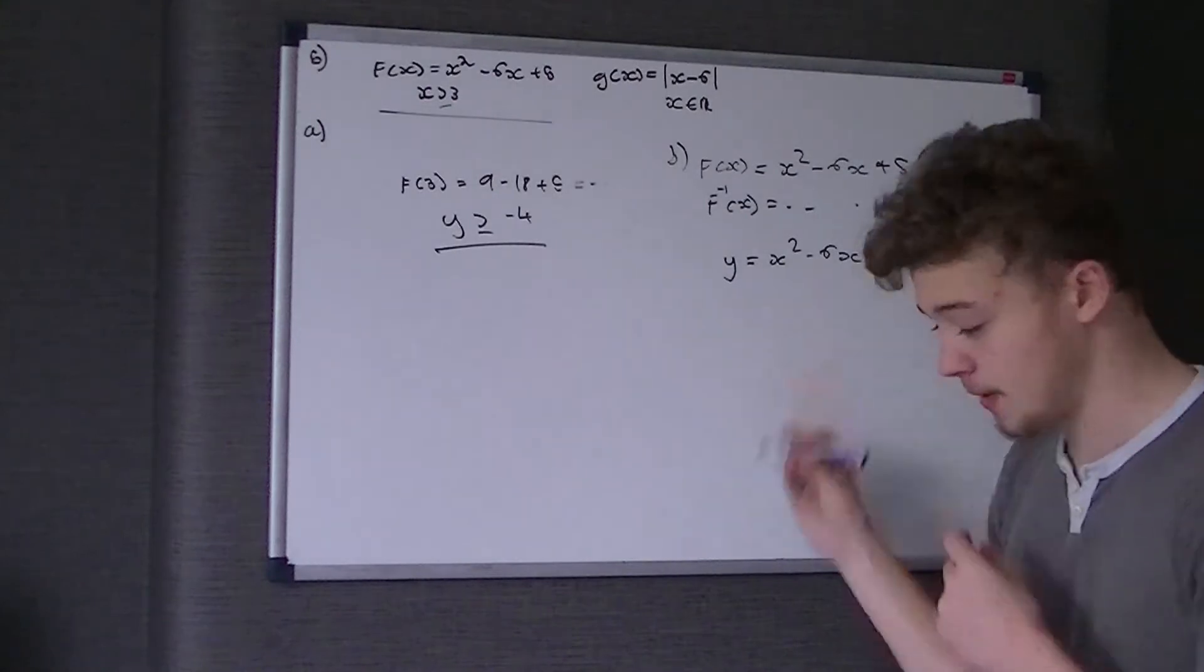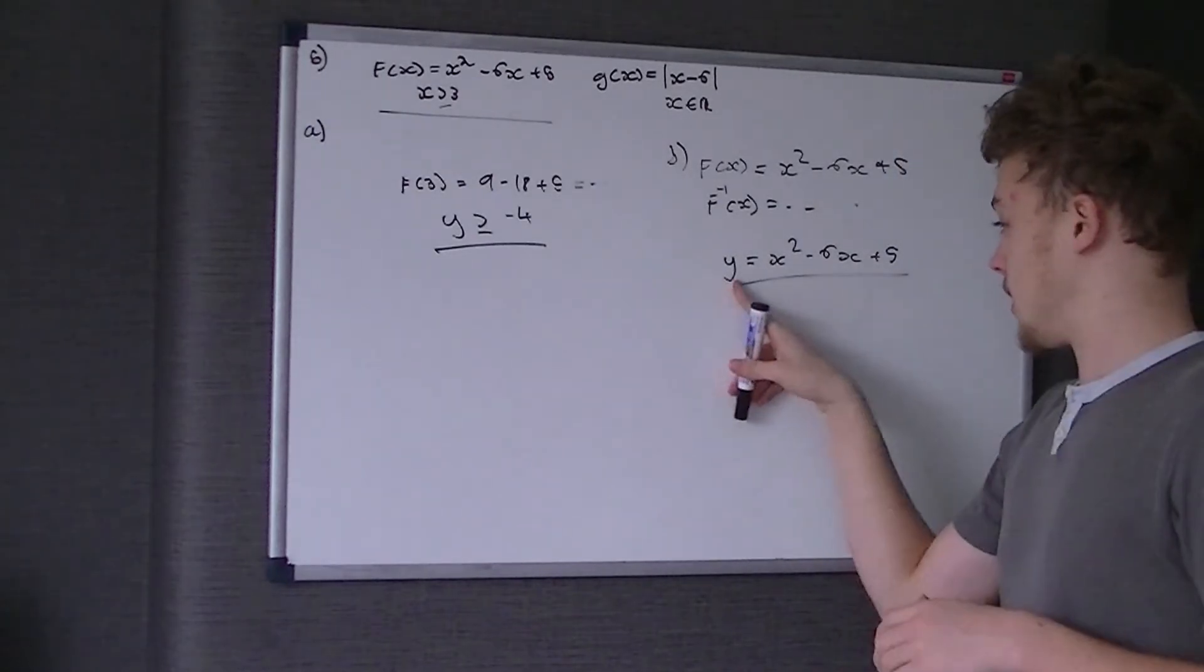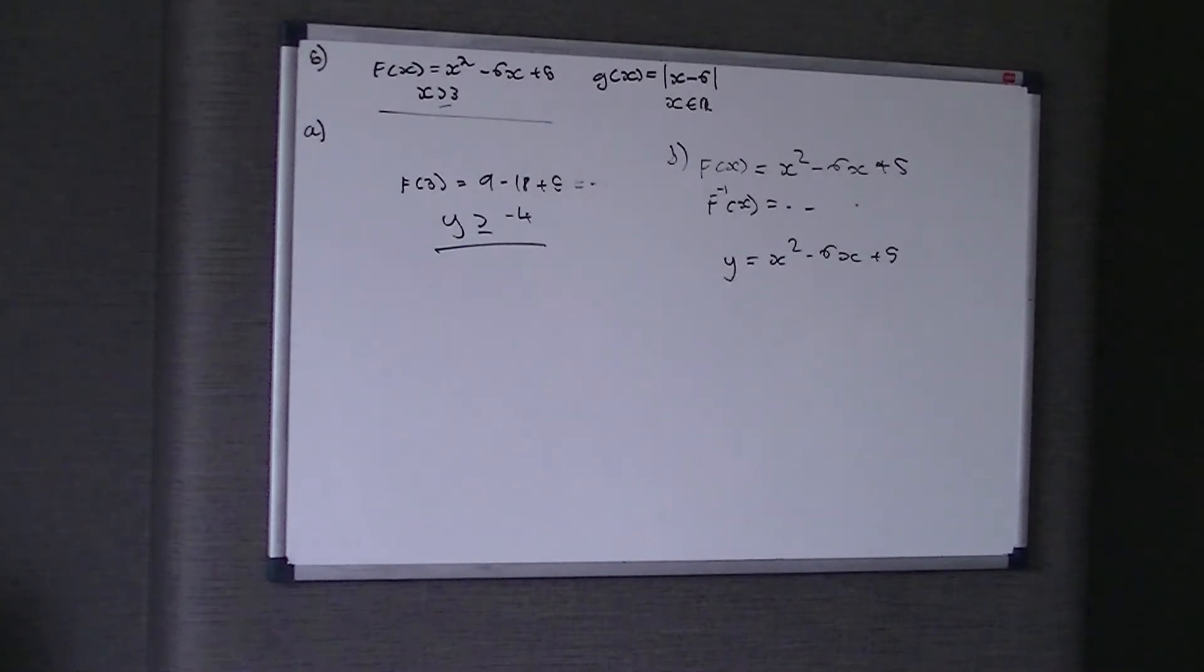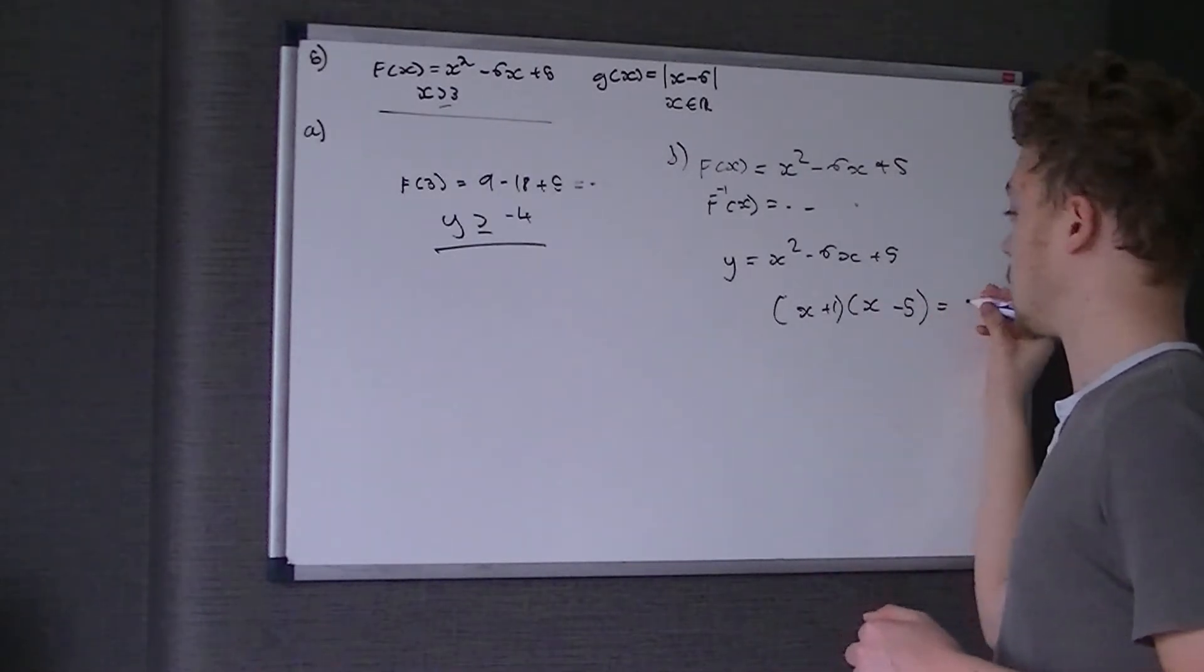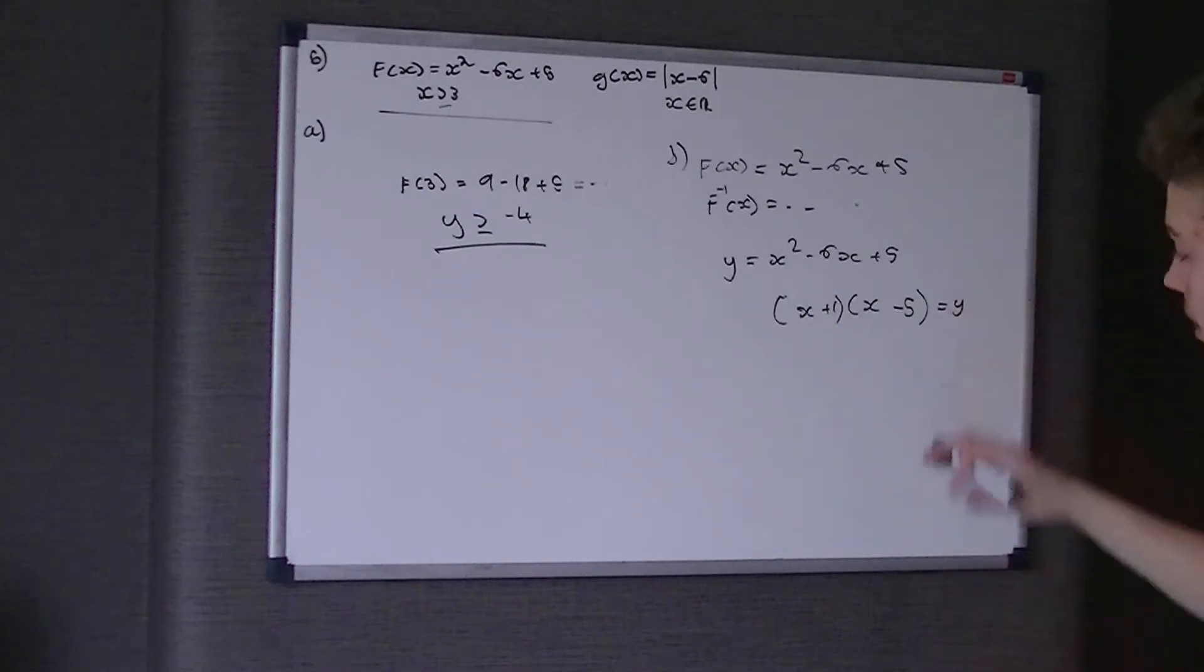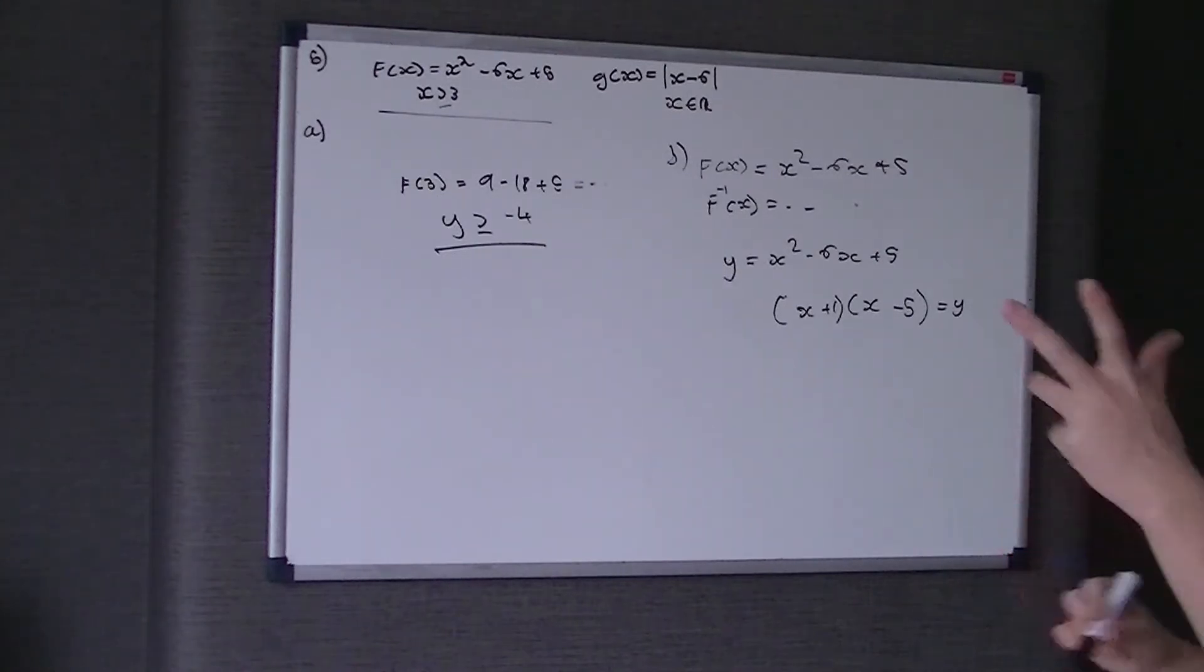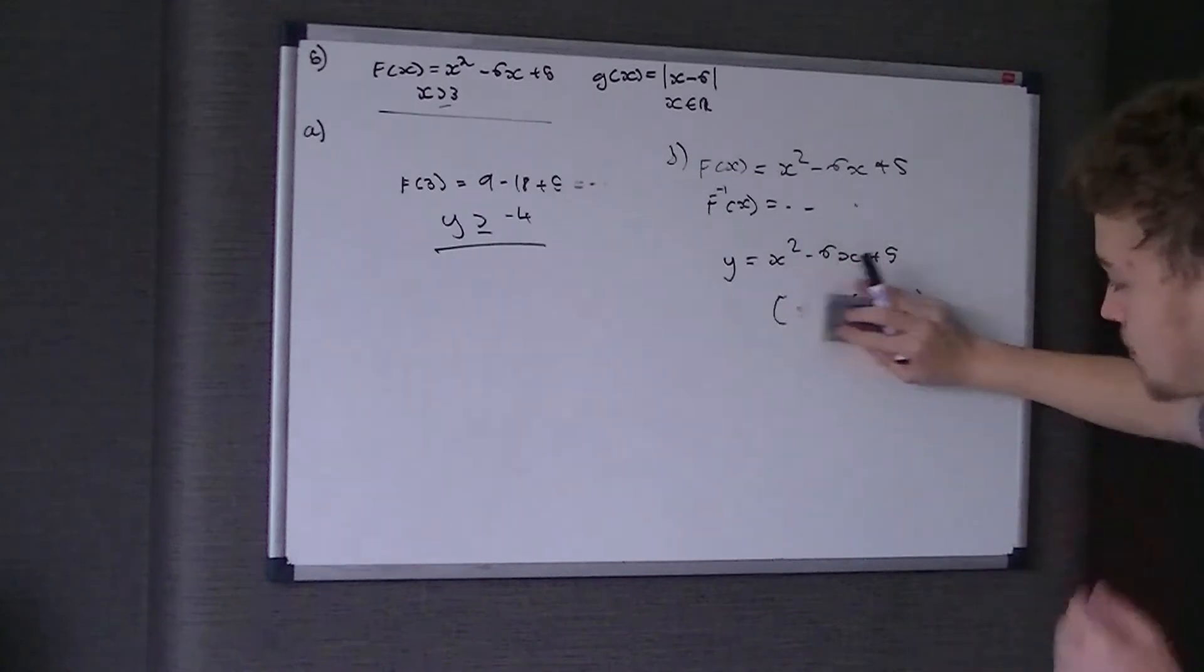The more eagle-eyed person will have spotted we've got a bit of a problem here. We've got a quadratic. The first thing you would think of is well, factorize it. If we did factorize it, this is what I ended up doing, we'll get (x+1)(x-5) equals y. Now we're not told y equals 0, so we can't say x is minus 1 and x is 5. And even if we did know that, that wouldn't give us the inverse function, that would just say where the intercepts are. So we can't, there's no point factorizing it.